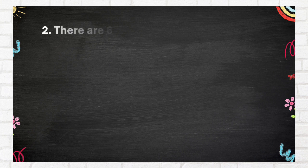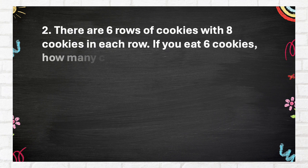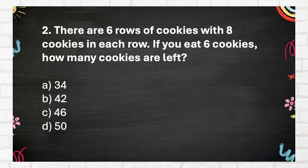Question number 2. There are 6 rows of cookies with 8 cookies in each row. If you eat 6 cookies, how many cookies are left? Again, there are 6 rows of cookies with 8 cookies in each row. If you eat 6 cookies, how many cookies are left? A. 34. B. 42. C. 46. D. 50.